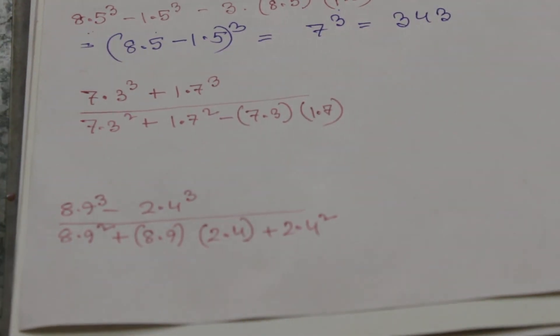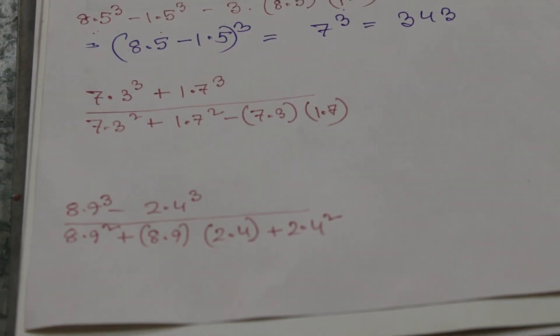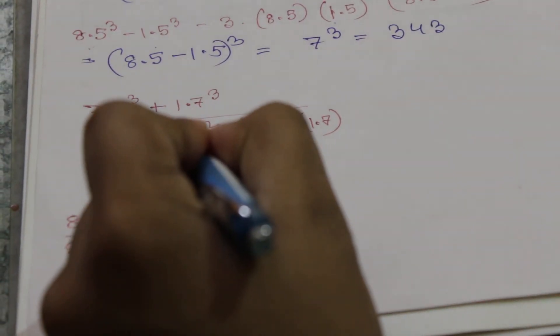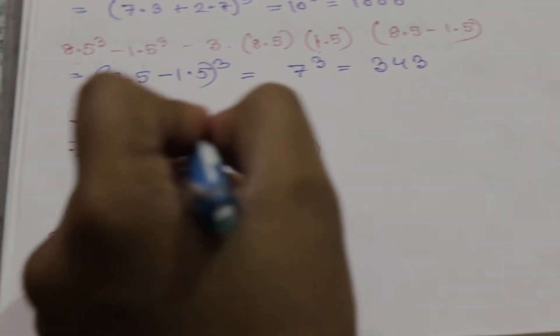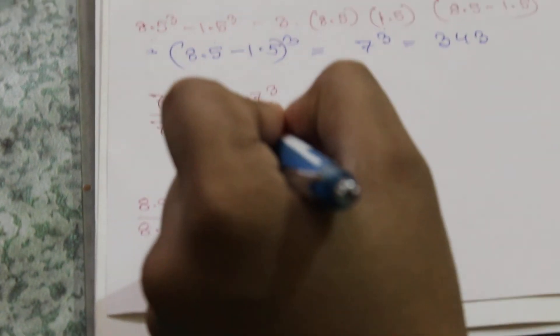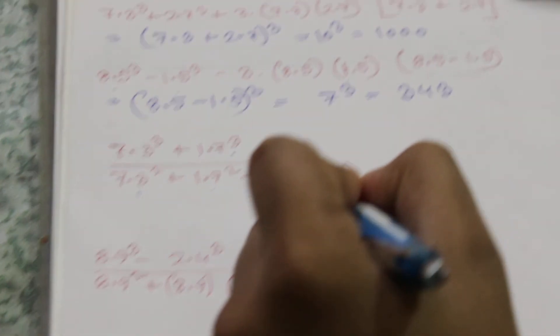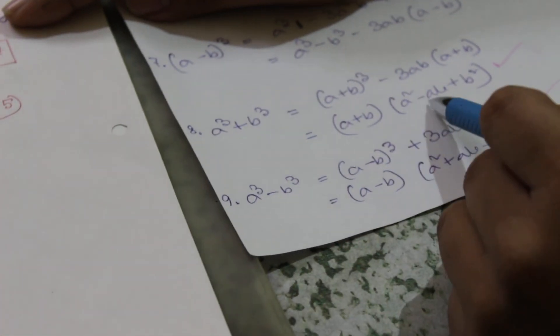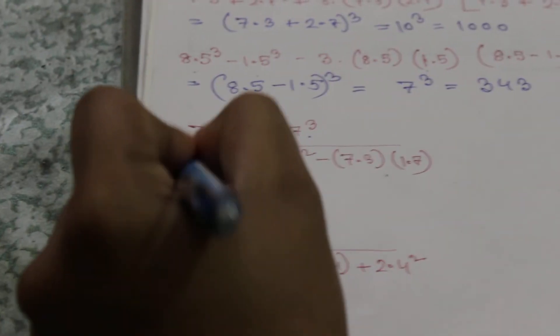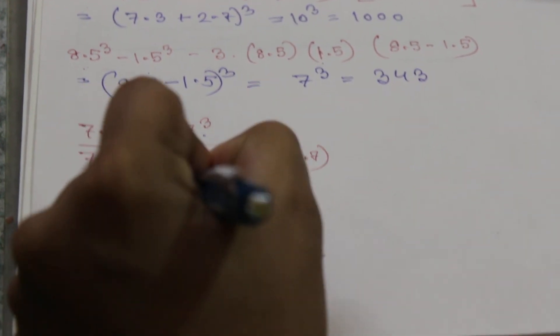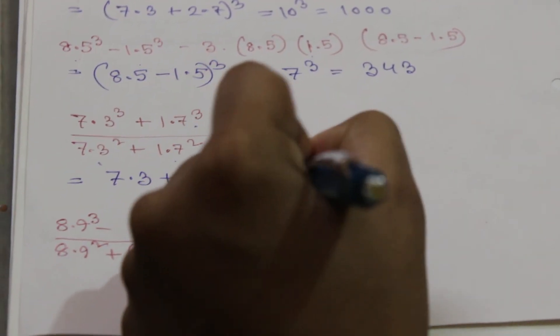The next example is: 7.3 whole cube plus 1.7 whole cube, divided by (7.3 whole square plus 1.7 whole square minus 7.3 into 1.7). This is a cube plus b cube divided by (a square minus ab plus b square), which equals (a + b). So the result is 7.3 plus 1.7, which equals 9.